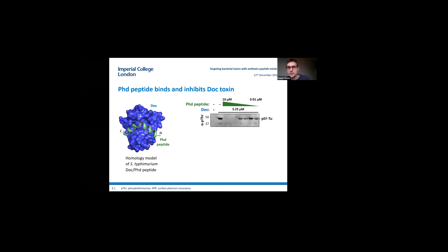We performed a Western blot assay. We incubated the Doc toxin together with the PhD peptide and the target EF-Tu and checked for phosphorylation of the EF-Tu. We could see that at concentration of the peptide equal to the Doc toxin, we don't see any phosphorylation of the EF-Tu anymore, so it's actually able to inhibit the Doc toxin activity.